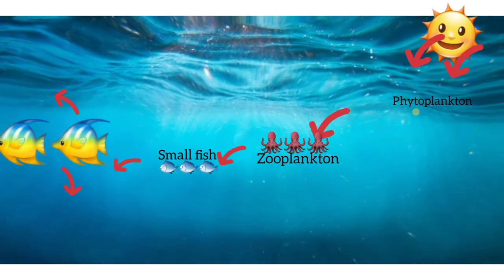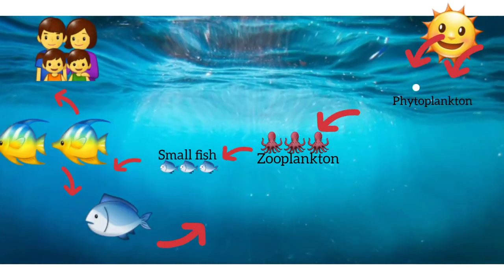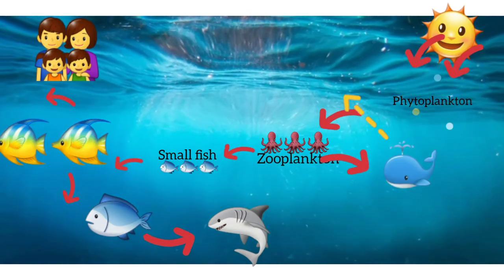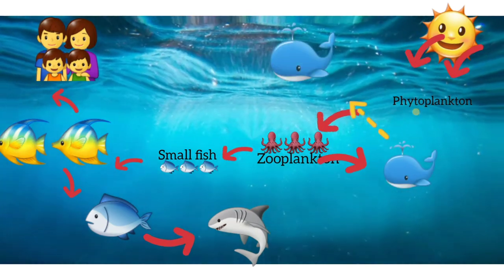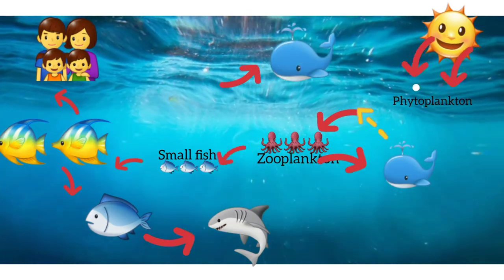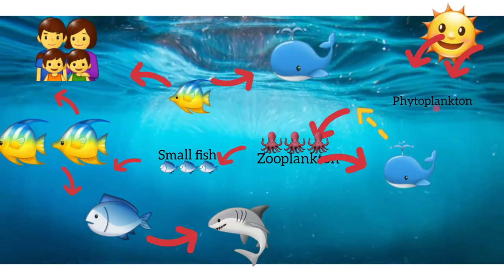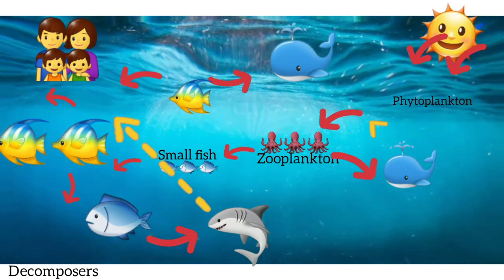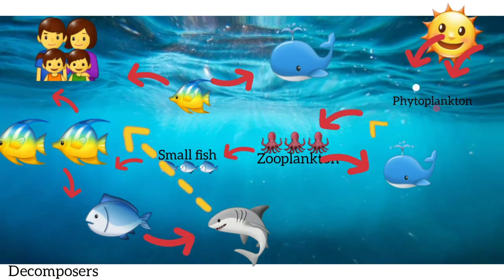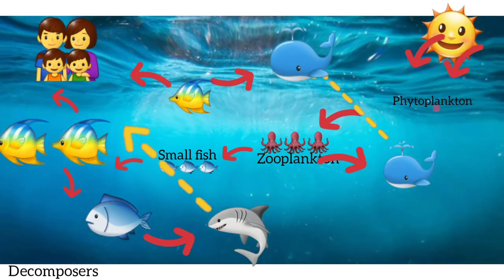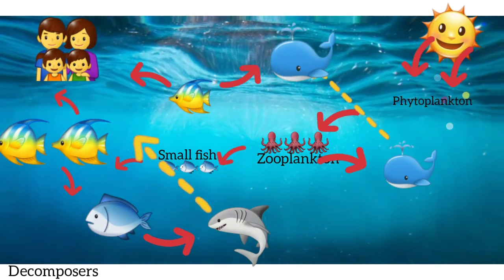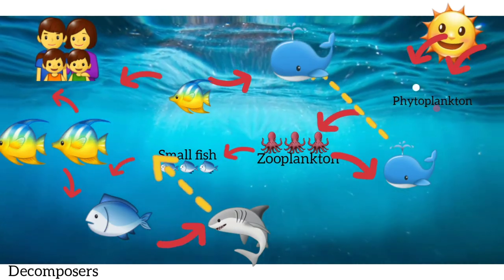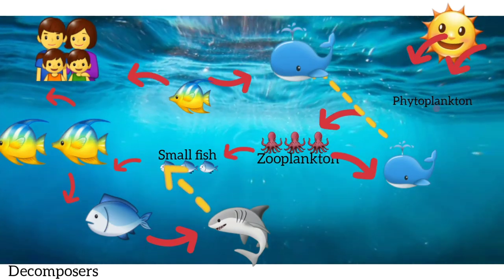Observe the diagram shown. Phytoplankton gets energy from the sun in order to reproduce. Zooplankton will then feed on them. Zooplankton will be eaten by small fishes, and small fishes are eaten by bigger ones, and so on and so forth.